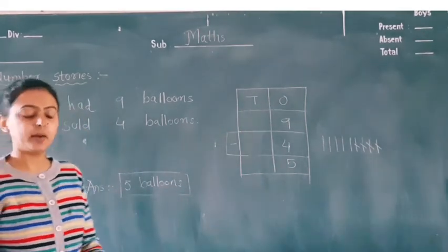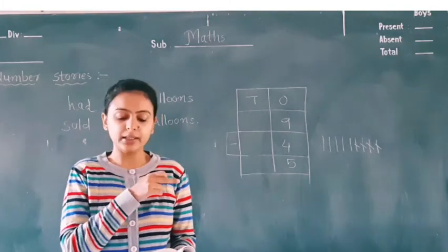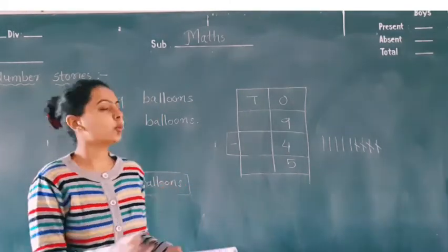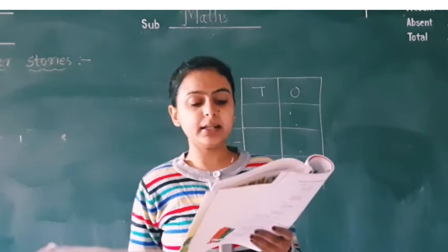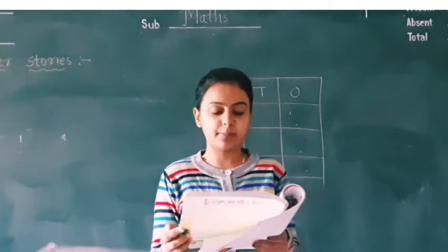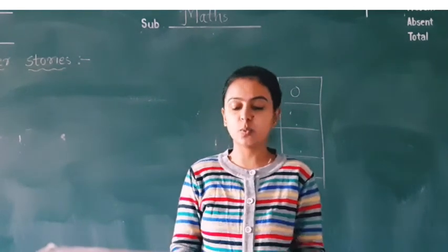So the answer will be 5 balloons. You have to write this in your notebook and textbook as well. Number 2: Manoj has 7 marbles and his brother Sonu has 9 marbles. How many more marbles does Sonu have?